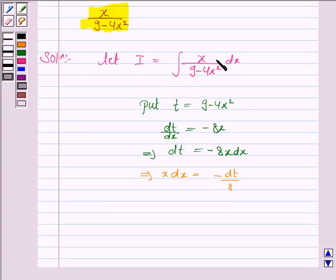So x into dx is minus dt upon 8 and 9 minus 4x square is t. So substituting all these values, the integral becomes 1 upon t into minus dt by 8.